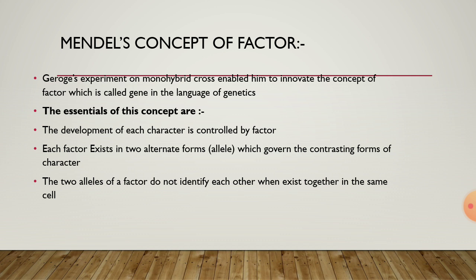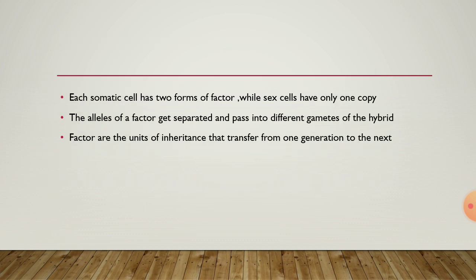The essentials of these concepts are: the development of each character is controlled by a factor. Each factor exists in two alternate forms, that is alleles, which govern the contrasting forms of character. The two alleles of a factor do not influence each other when they exist together in the same cell. Each somatic cell has two forms of factor while sex cells have only one copy. The allele of a factor gets separated and passes into different gametes of the hybrid. Factors are the units of inheritance that transfer from one generation to the next.